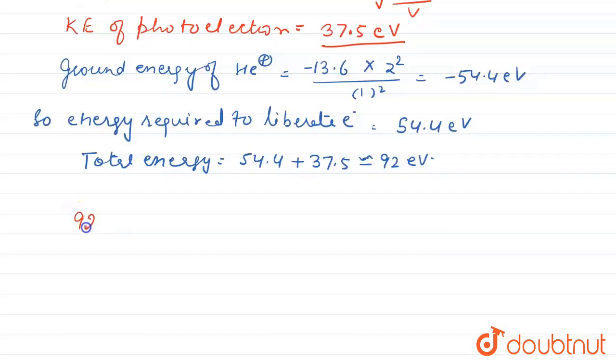Total energy is equal to 13.6 multiplied by z square, 1 over 1 square minus 1 over 2 square. On solving this we get z is equal to 3.